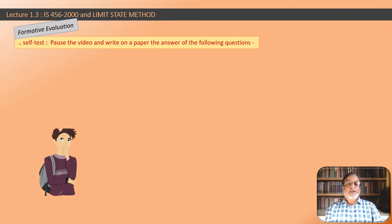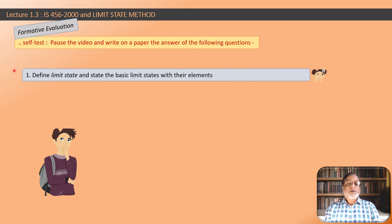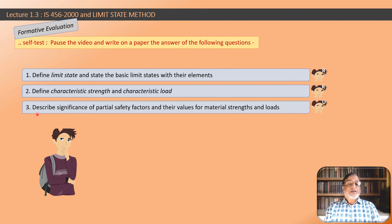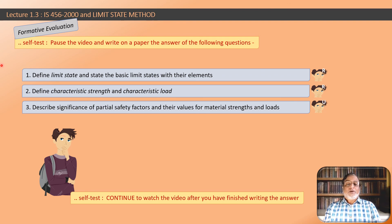Before the conclusion, let us have a quick formative evaluation. Pause the video and write answers to: 1. Define limit state and state the basic limit states and their subcategories. 2. Define characteristic strength and characteristic load. 3. Describe the significance of partial safety factors, state their necessity, and give their values for material strength and loads. If you cannot answer any part, go back and rewatch the relevant section.